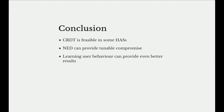To conclude: constant-rate dummy traffic is not necessarily infeasible for some home automation systems depending on the hardware. For example, if the system uses regular Wi-Fi hardware, constant-rate dummy traffic might be the way to go to achieve perfect epsilon-delta private communication at moderate costs. In other cases, naive exponential dummies can provide a tunable compromise between privacy and energy efficiency. Other algorithms that learn user behavior and try to adapt might even provide better results using less energy. Thank you.